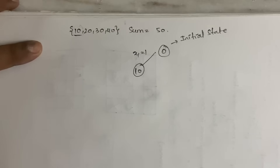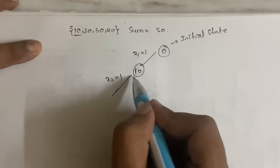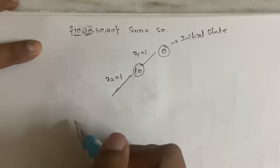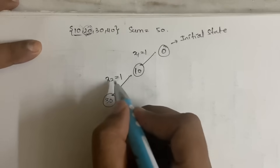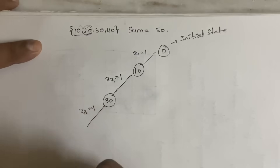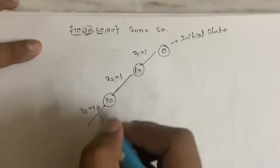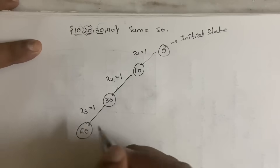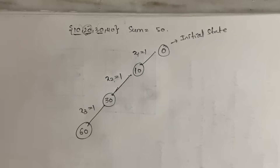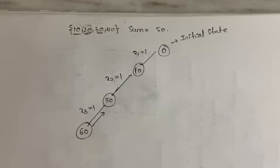From 10 you can get two scenarios. Take x2=1, meaning you are considering the second element 20. So 10+20=30. Next, take x3=1, meaning you are considering the third element 30. So 30+30=60. Is 60 your required sum? No, 60 has already exceeded your required sum of 50, so go back.